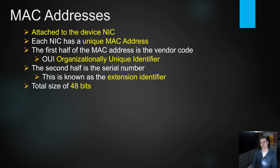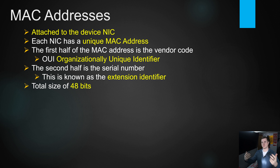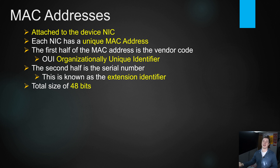Each NIC on a device has a unique identifier called the MAC address. The first half of the MAC address is the organizationally unique identifier (OUI); the second half is a serial number from the manufacturer. The total size is 48 bits. From a security standpoint, IP addresses can change and you can spoof a MAC address, but for the most part the MAC address is how devices get identified and tracked.